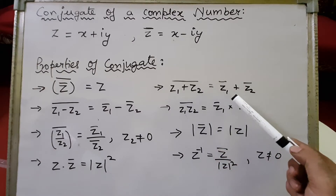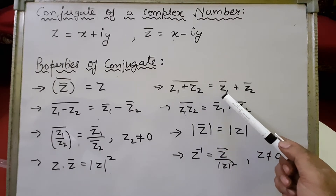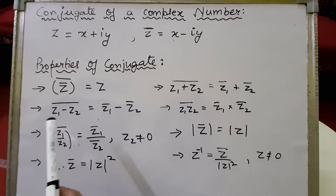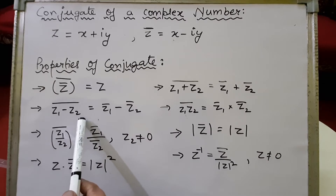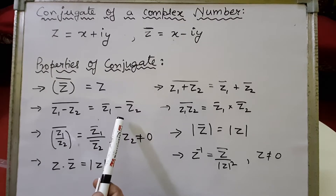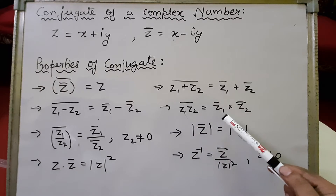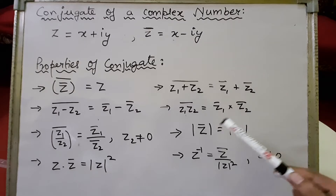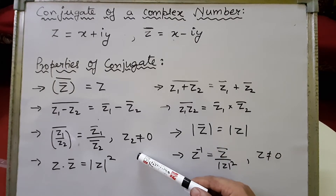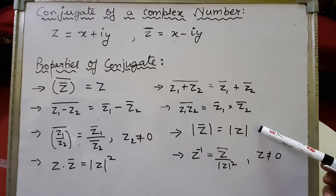The second property: the conjugate of z1 plus z2 equals the conjugate of z1 plus the conjugate of z2 — we get the same result whether we add first and then conjugate, or conjugate first and then add. Similarly for subtraction: conjugate of z1 minus z2 equals conjugate of z1 minus conjugate of z2. For multiplication: conjugate of z1·z2 equals conjugate of z1 into conjugate of z2. For division: conjugate of z1 upon z2 equals conjugate of z1 upon conjugate of z2, provided z2 is not zero.